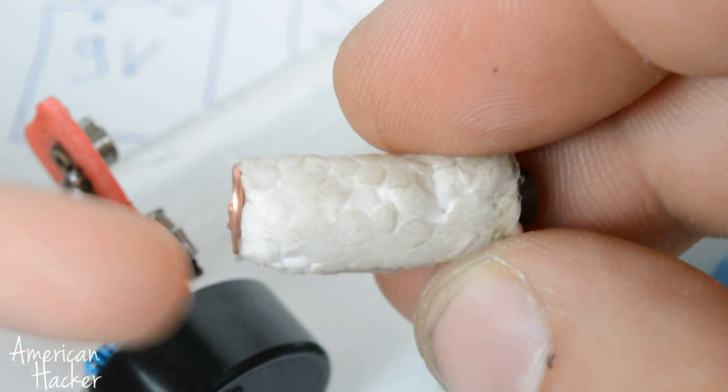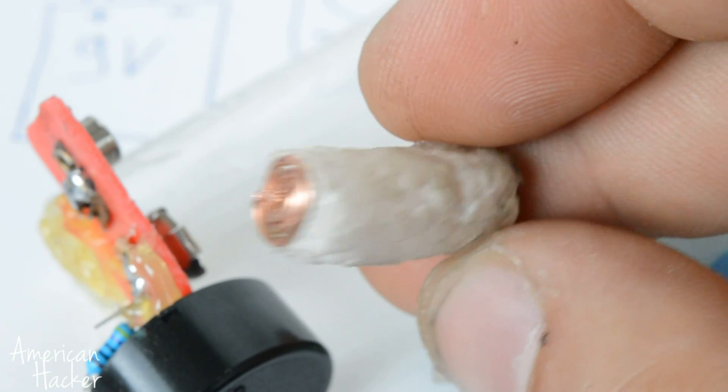First you need to glue a copper wire on a styrofoam piece and this will be the trigger switch.